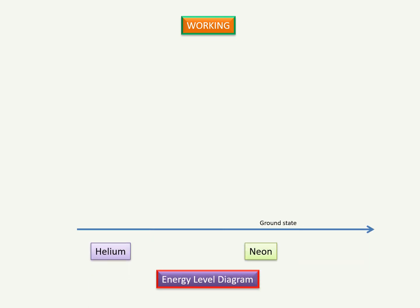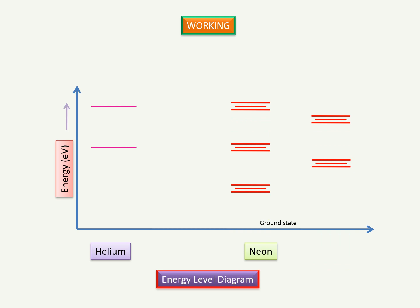Now, let us see the working of a Helium-Neon laser. This is the energy level diagram. These are the ground state and excited states of Helium and Neon gas. By the electrical discharge, the ground state Helium atoms are excited to higher energy levels. This excitation occurs due to the collision of discharged electrons with Helium atoms.